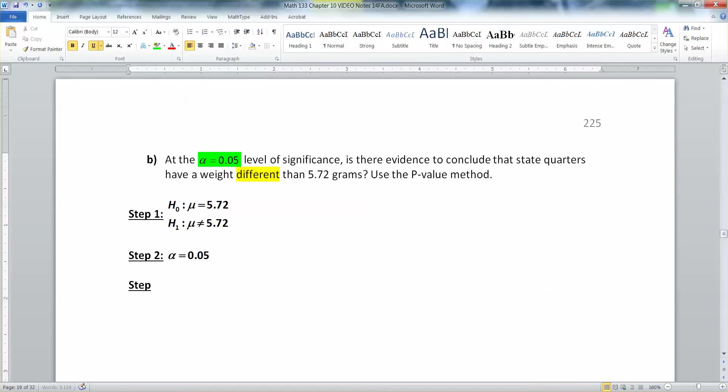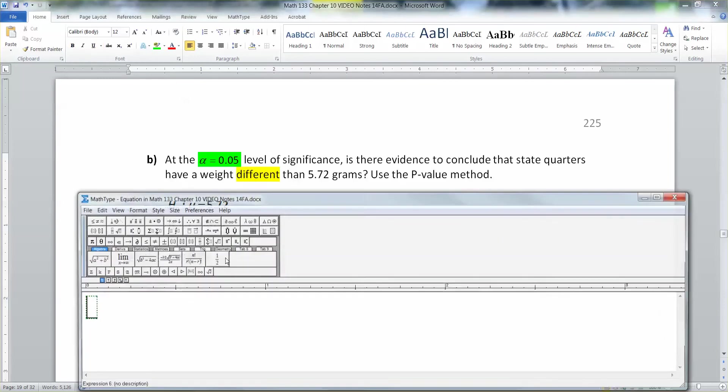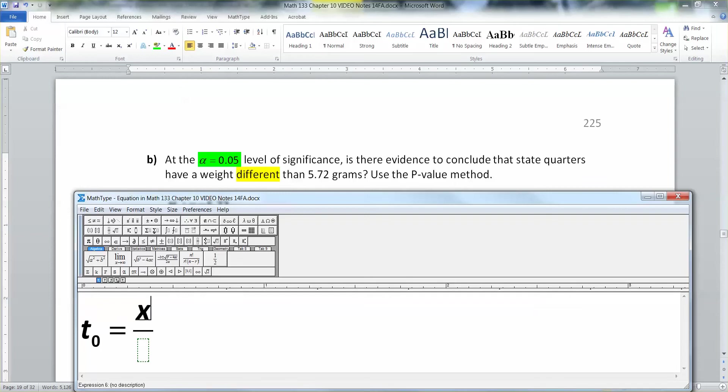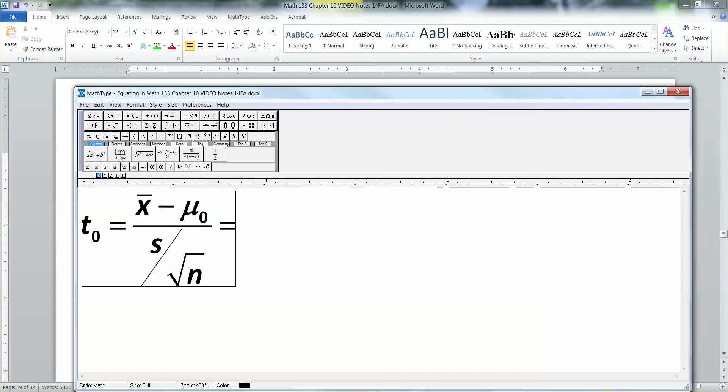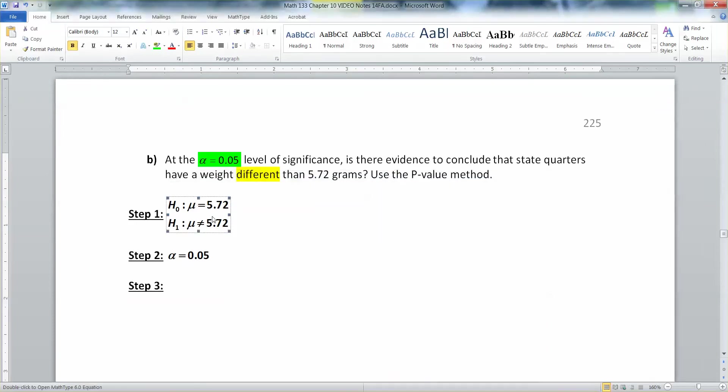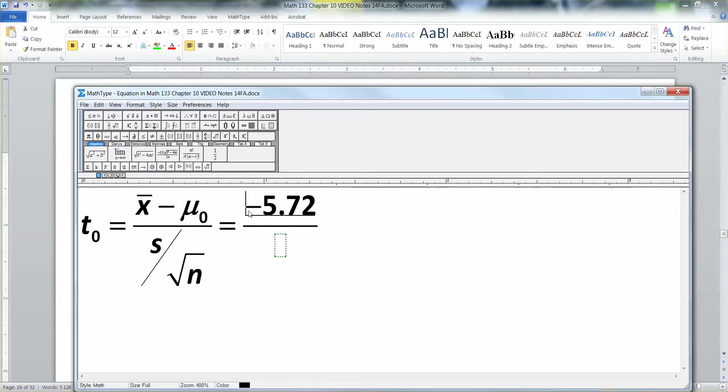Step three, you need to come up with a test statistic. So that's T0 equals, and then you can use the formula, x bar minus mu zero over s divided by the square root of n. Now let's see here. We need to know x bar, s, and the square root of n would come from the sample size. So we're going to need to know a whole bunch. The only thing I do know right off the bat is that I know that it's minus 5.72 because mu zero, the zero comes from the null hypothesis. So if you look at your null hypothesis, you assumed 5.72 in that null hypothesis. So mu zero is that value. But I'll have to figure out everything else.